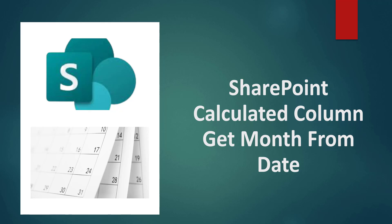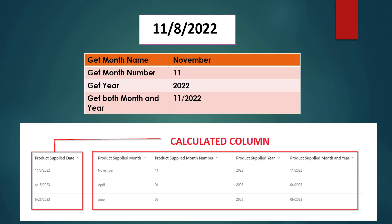Let me explain with an example. Assume that I have a SharePoint list which has a date column. Based on that date column we will create a calculated column to get a month name, month number, year, and also both month and year for this particular date — like the example I have shown you here.